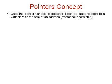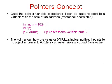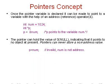Once a pointer variable is declared it can be made to point to a variable with the help of the address operator, that is the ampersand sign. For example, here num is an integer variable with the value 1024. Then we have a pointer variable p pointing to an integer. In the next line we assign p = &num, that means p points to the variable num. A pointer can hold the value 0, indicating it points to no object — that is called a null pointer. But a pointer can never store a non-address value, meaning p = num is invalid because num is not an address, it is an integer.